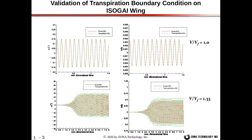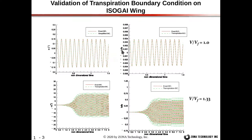Let's look at some quick validation cases of the transpiration boundary condition on the ISOGAI wing. On the upper left we have the angle of attack, on the right we have the plunge — both at the flutter speed. The red line is the exact boundary condition; the green dashed line is the transpiration boundary condition. You can see that the angle of attack time histories are right on top of each other — practically the same result — and the same is true for the plunge.